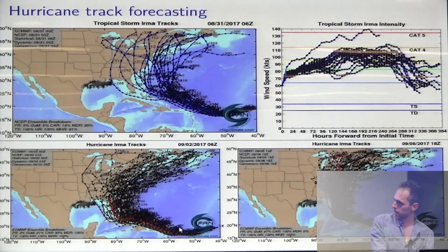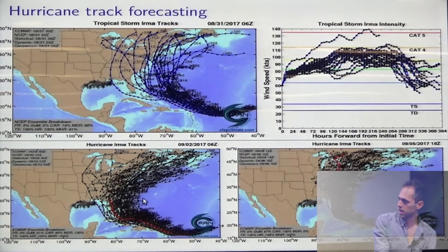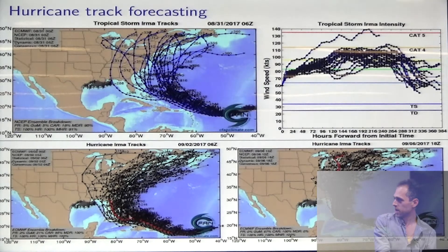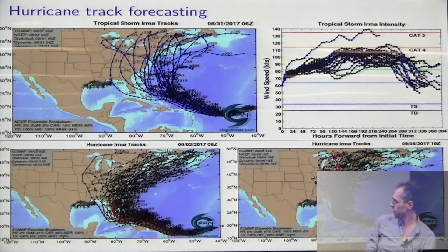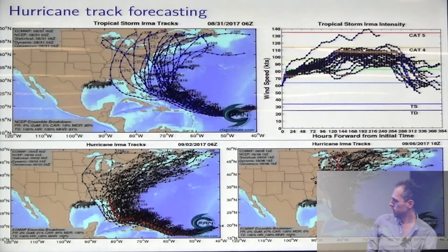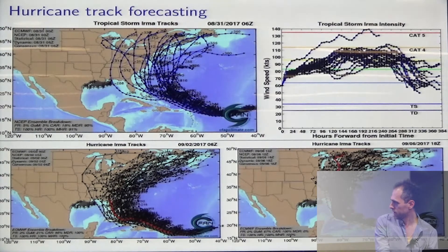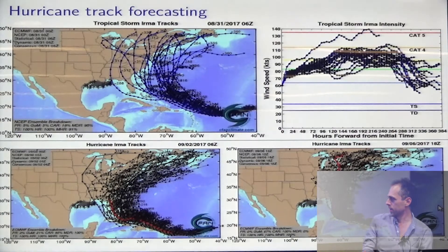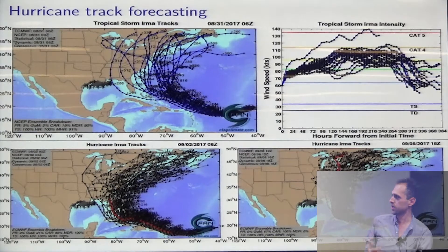On September 6th, the updated data showed it split down the middle, with the red line going right through Florida. So you get a pretty good idea that people need to start evacuating or finding safe shelter, especially when you start seeing wind speeds of 150 miles an hour and greater.